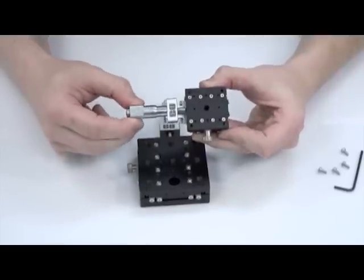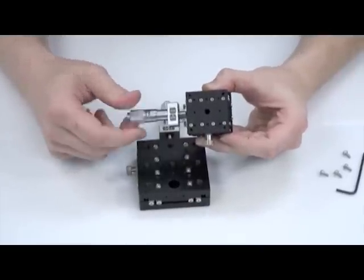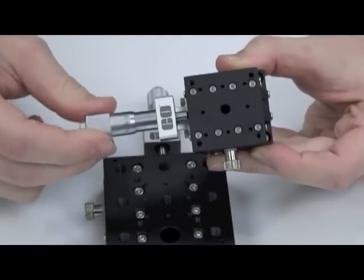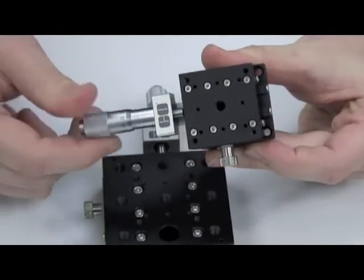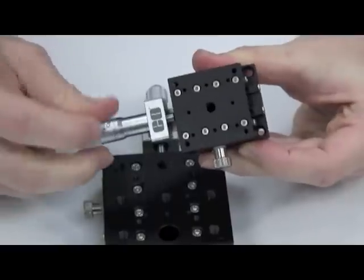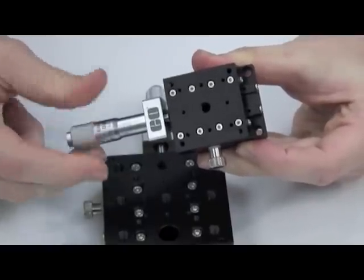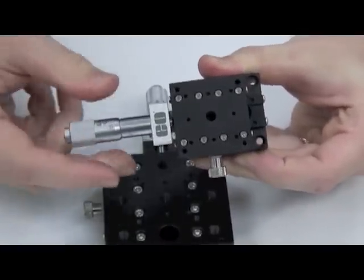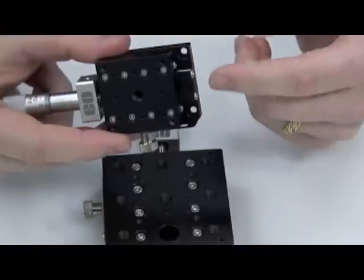turn the micrometer drive to the 40mm stage counter clockwise until the two M3 counter bore holes in the base are exposed. Here and here.